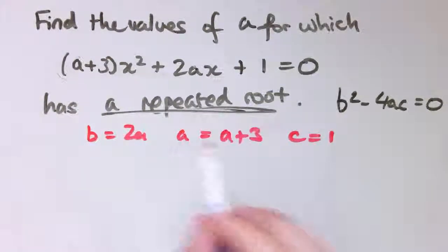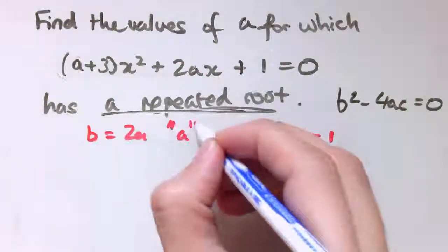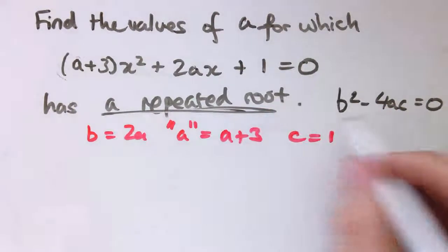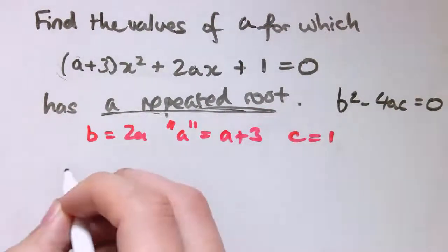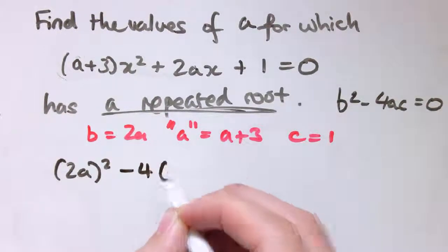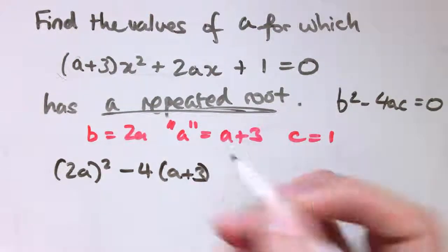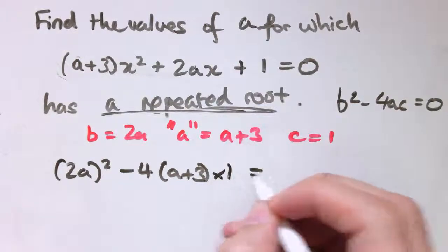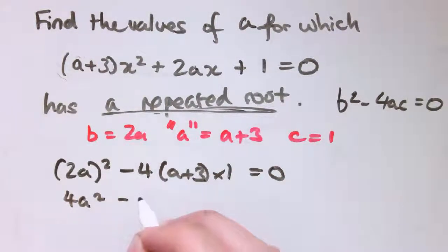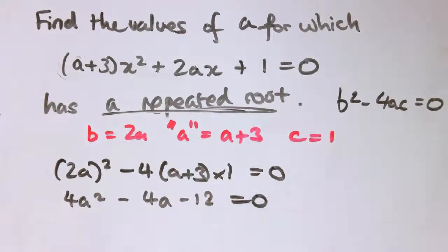So maybe this a in inverted commas is the a from the quadratic formula. So b squared minus 4ac equals 0 gives us, here's b squared minus 4 times a, but a is a plus 3, times 1 equals 0. And that's 4a squared minus 4a minus 12 equals 0.